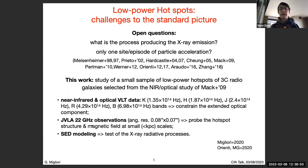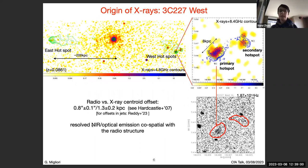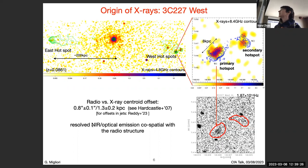I will focus on two targets addressing both questions. For the first question on the origin of X-rays, we consider the western hotspot in radio galaxy 3C227. On the left you can see the Chandra X-ray image of the galaxy with radio contours — it is extended on 100 kiloparsecs. On the right is the zoom on the X-ray and radio image, and you can immediately see an offset between the radio and X-ray centroids of emission.